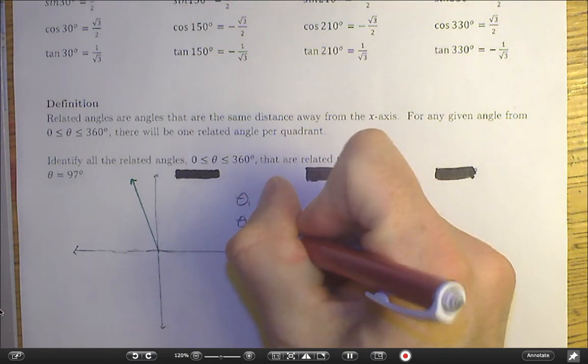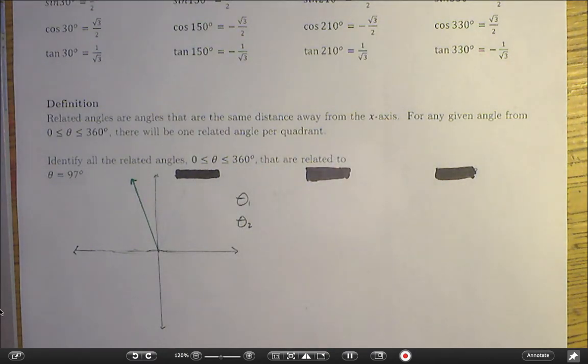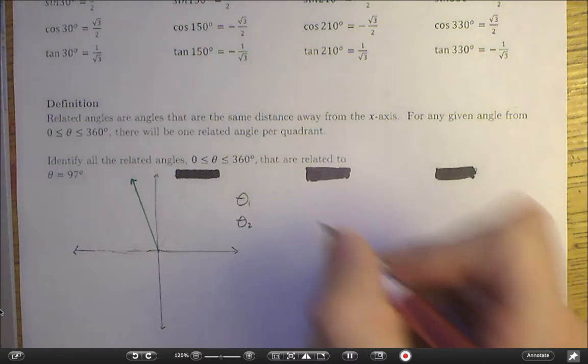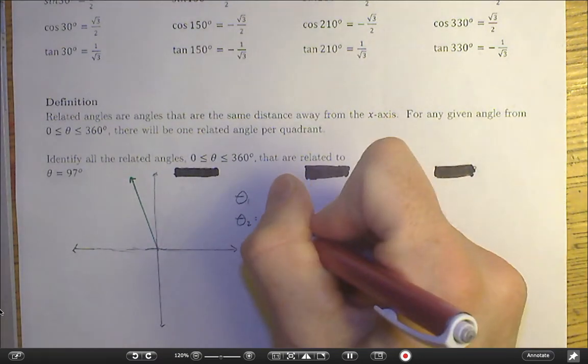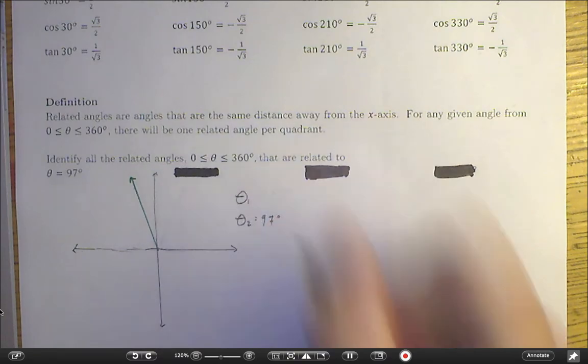So my theta 2, since they're related, I'm going to call them a family of angles. My theta 2, or my related angle in this family in quadrant number 2, is 97 degrees.